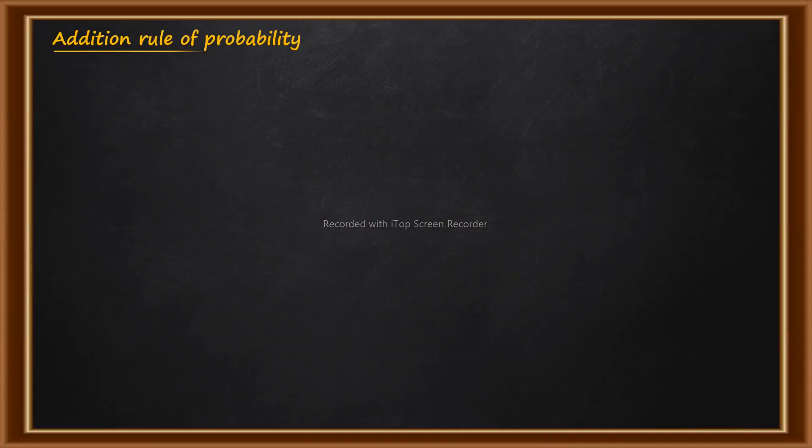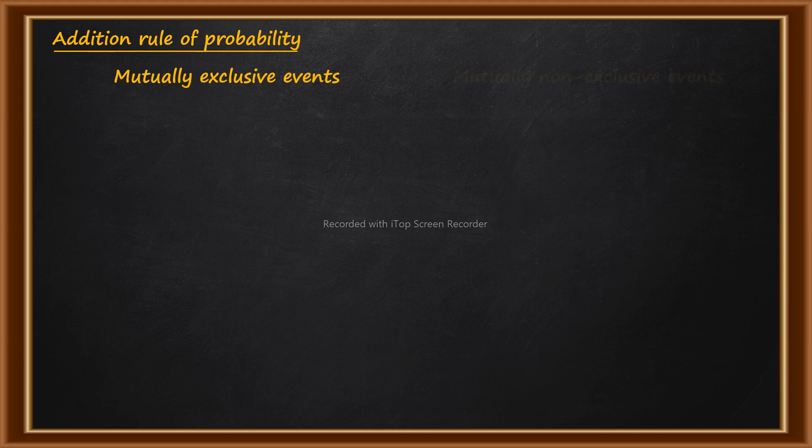Let's talk about the addition rule of probability. It is applied when we have to find out the probability of either event A or event B. This also has two types. When you have two events — and there can be multiple events — the keyword is 'either/or' or 'at least one of them.' You have to check whether the events are mutually exclusive or mutually non-exclusive.